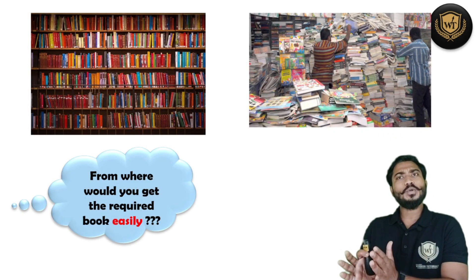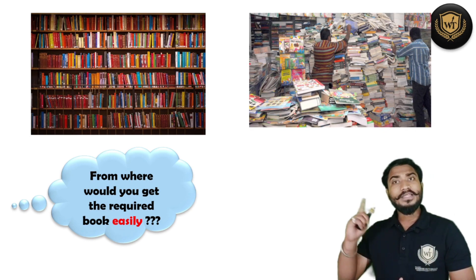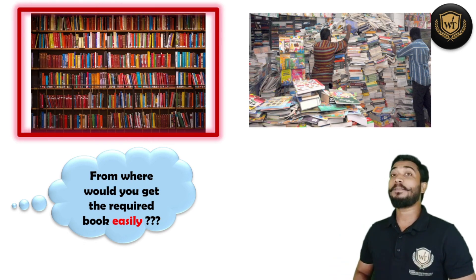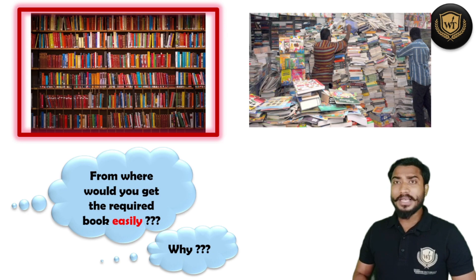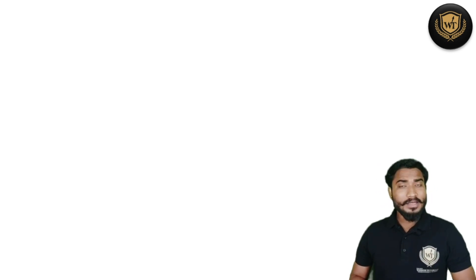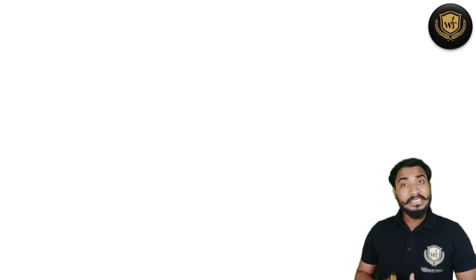Here on the screen you can observe two different situations. If you want to get a required book very easily, out of these two places which place would you select? Place number one — because again the books are systematically arranged. Out of these two examples, the clothes were arranged on the basis of size, brands, and colors; similarly the books were arranged according to the name of the author. To arrange anything, we require a base.